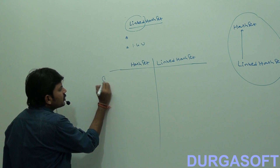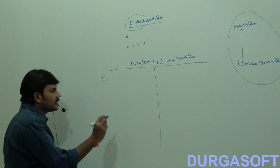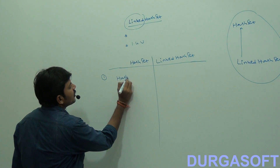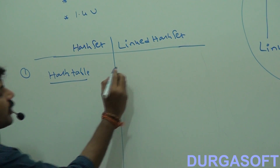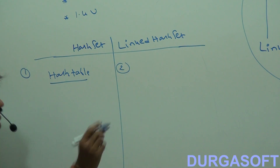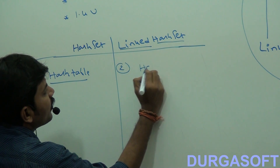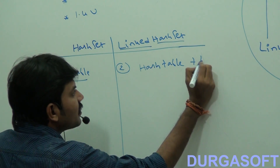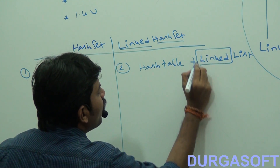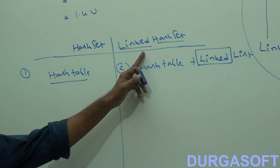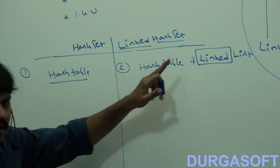Now the first point in the comparison: the underlying data structure for HashSet is a Hashtable. But the underlying data structure for LinkedHashSet — have you observed the name? — it is a combination of Hashtable plus LinkedList. That's why the word 'linked' is in LinkedHashSet. It uses a hybrid data structure: Hashtable and LinkedList.